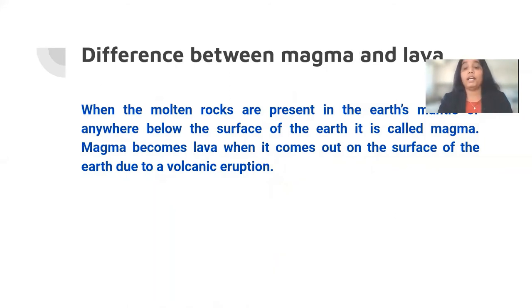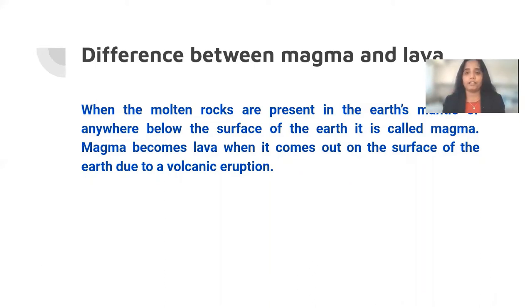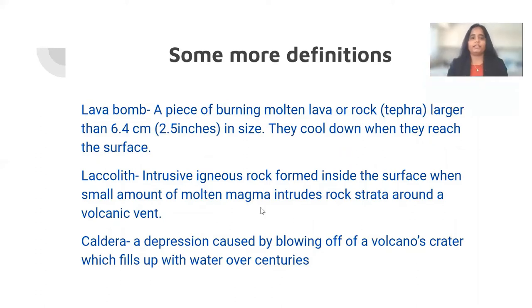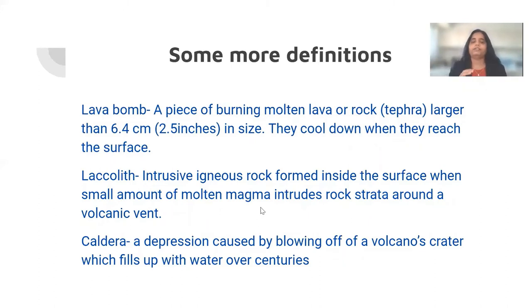What is the difference between magma and lava? Magma is molten rock inside the earth. When it comes out of the surface, we call it lava. There are some other definitions to know. What is a lava bomb? Molten lava or molten rock which is bigger than 6.4 cm — that is, bigger than about 2.5 inches — when it erupts, it comes out like a bomb. Pieces of lava or molten rock which are more than 2.5 inches in size are called lava bombs.